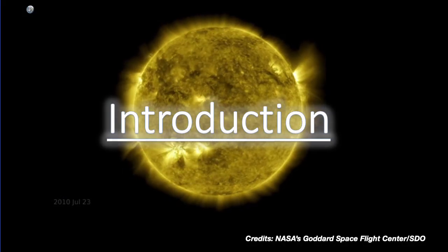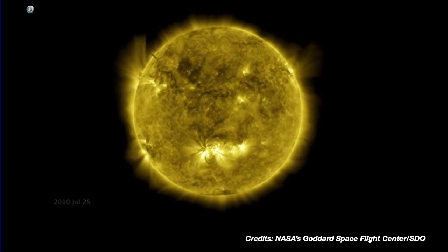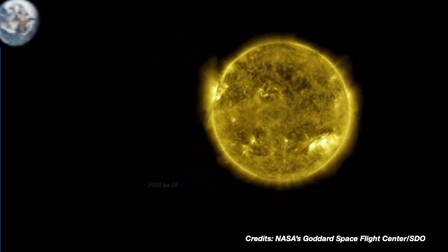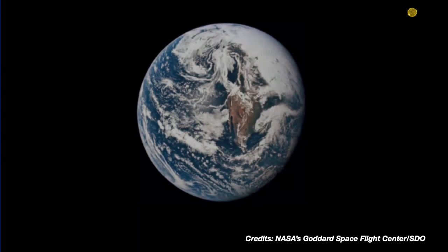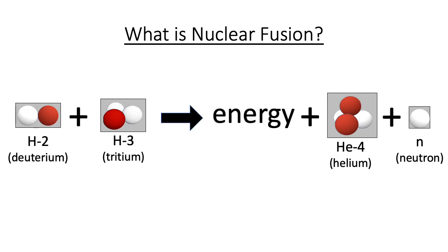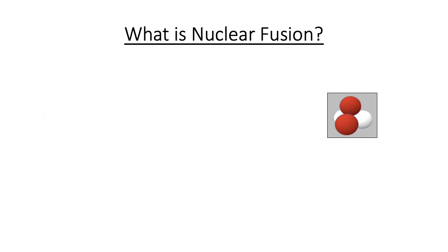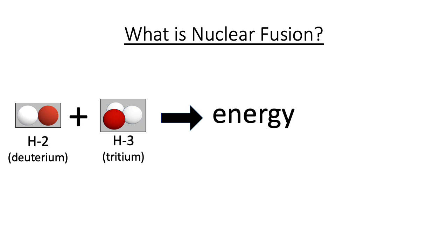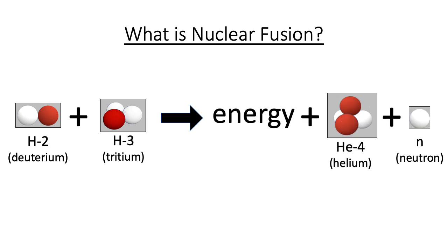Fusion is the power that drives the Sun, and billions of dollars have been invested to bring fusion energy home to planet Earth. The fusion reaction is deceptively simple. Smaller nuclei, such as the hydrogen isotopes of deuterium and tritium, release large amounts of energy when forced to combine in nuclear fusion, along with by-products such as helium and the neutron.